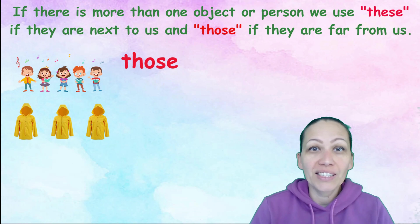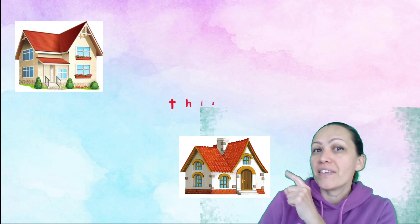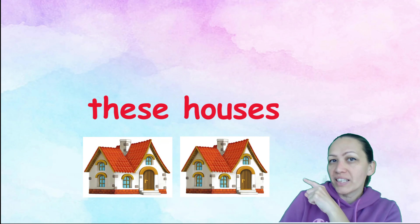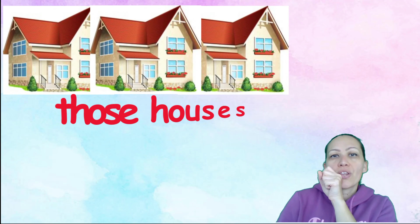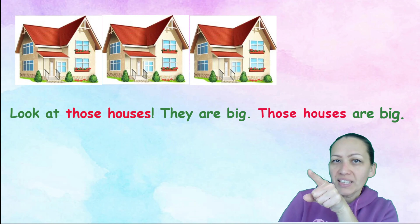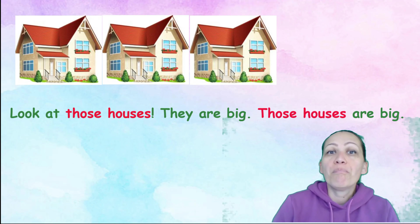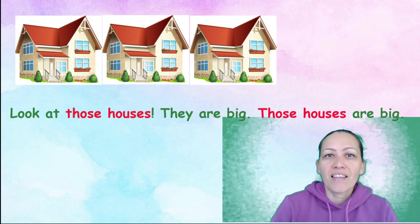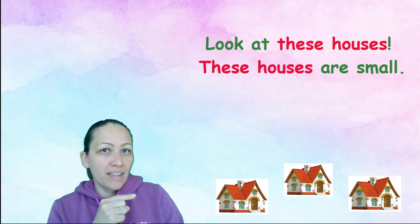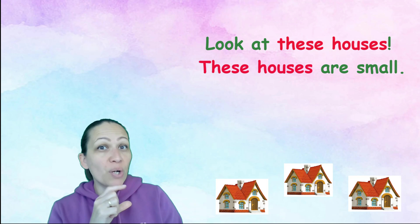Let's try those examples. This house, that house, these houses, those houses. Look at those houses. They are big. Those houses are big. Look at these houses. These houses are small.